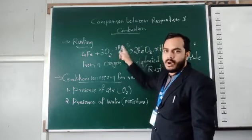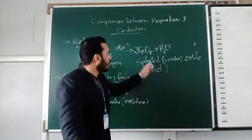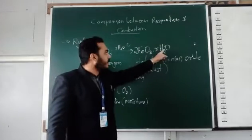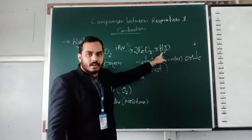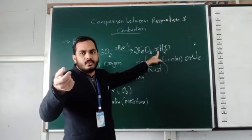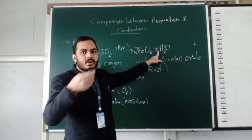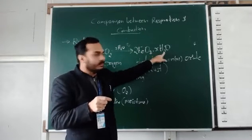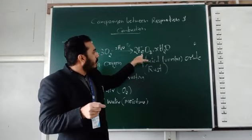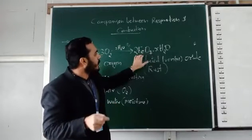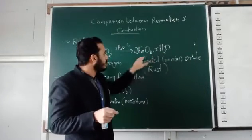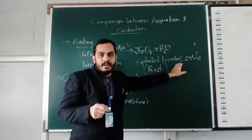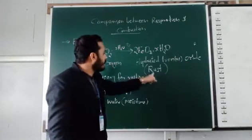The chemical reaction: iron reacts with oxygen in the presence of water to form hydrated iron oxide. Hydrated iron oxide means water is incorporated into the iron oxide. The 'x' in the formula means the number of water molecules is not fixed — it is not a specific number of water molecules.